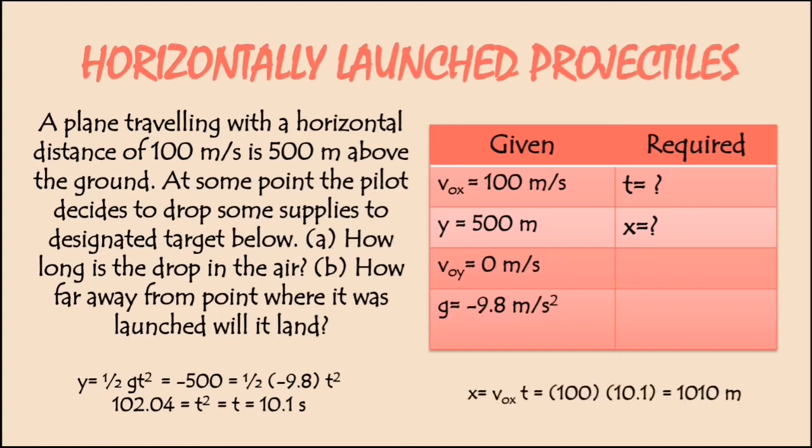Now, let's move on to the horizontal velocity. We're going to use the formula x = vt. Since we have the value already of the velocity, 100 meter per second, we're going to multiply it by the time that we got, which is 10.1 seconds. 100 times 10.1 would be 1010 meter.